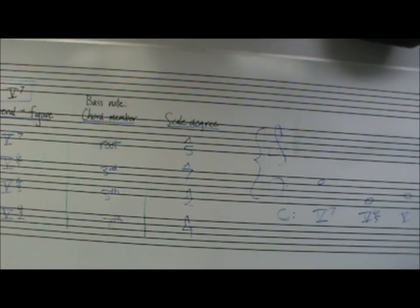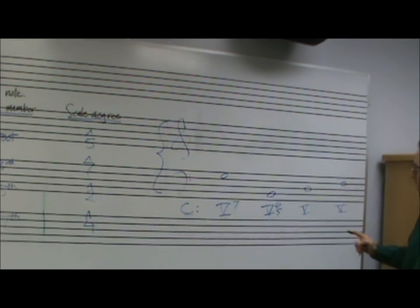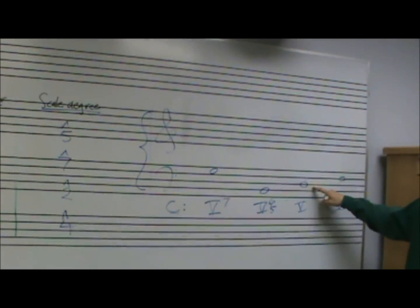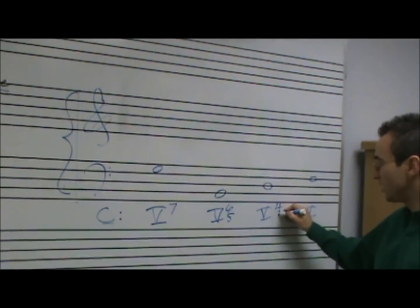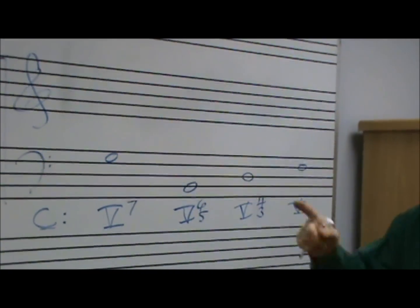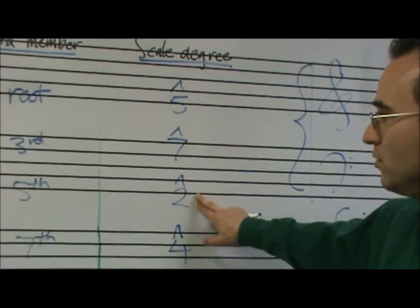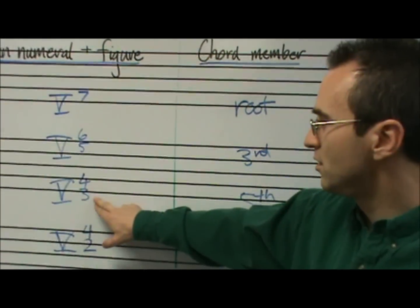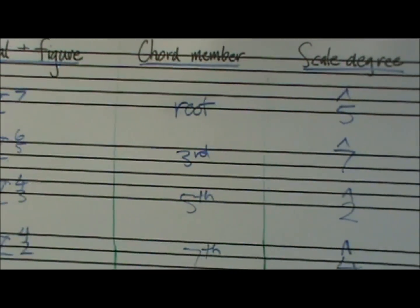If I have a dominant 7th sound and I have scale degree 2 in the bass, I can know right away that that's 543 if I've memorized this information over here. Scale degree 2 in the bass has to go to 543.